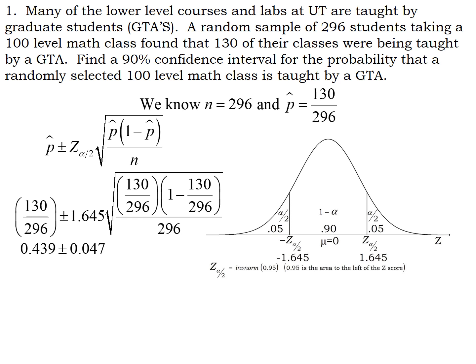So 130 divided by 296 is 0.439. And the 1.645 times the big giant square root is 0.047. So once again, this is our point estimate on the left plus or minus our margin of error. P-hat is my best point estimate of P. So now when I add and subtract the 0.047 from the 0.439, we end up with 0.392 as our lower limit, our lower estimate on the probability, and 0.486 as our upper estimate on the probability. So the probability that a randomly selected 100 level math class ends up being taught by a GTA is somewhere between 0.392 and 0.486.